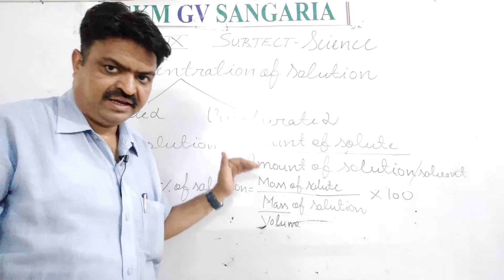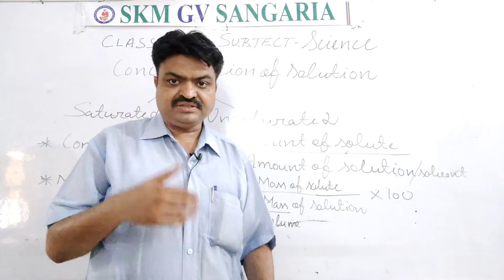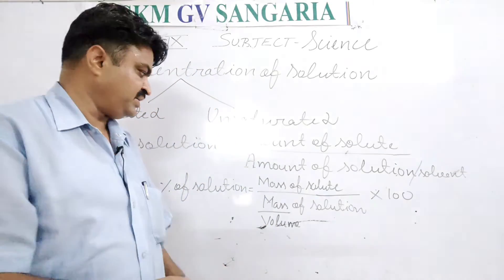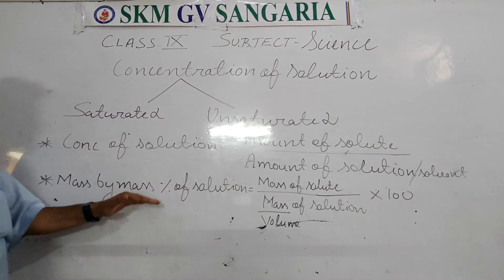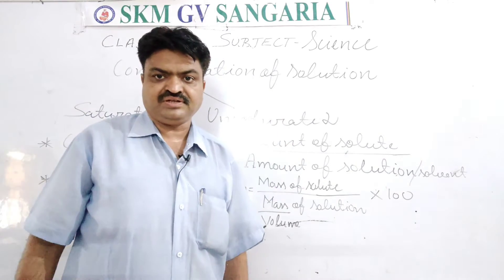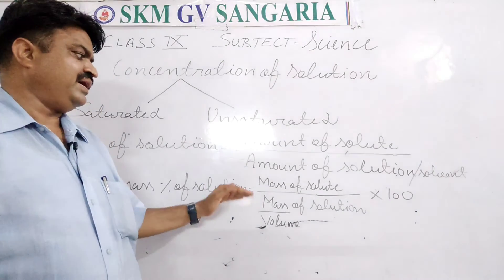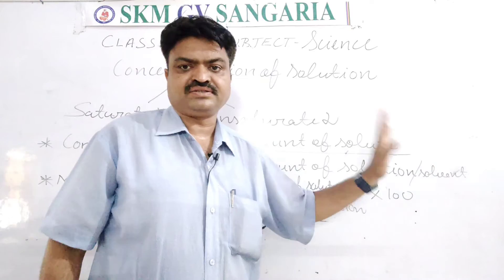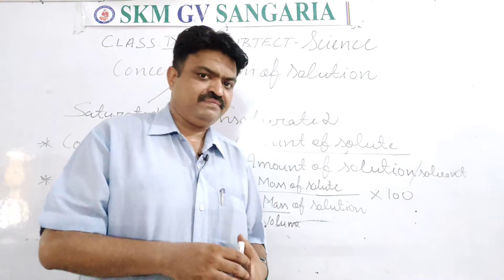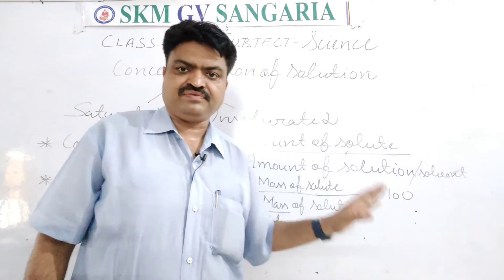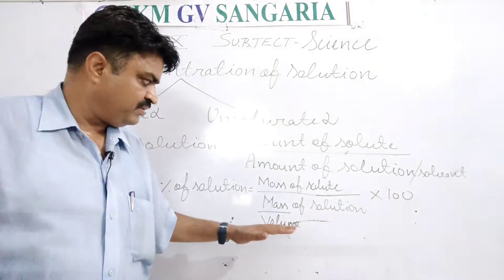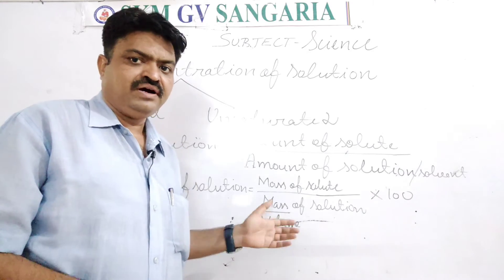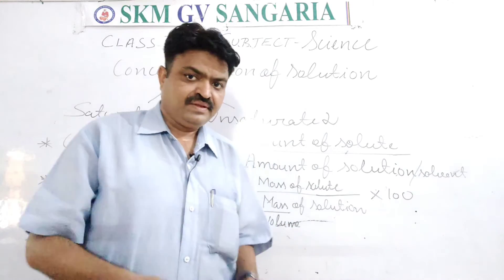So the two factors on which concentration of solution depends are: first, amount of solute; second, amount of solution or solvent. Now, the mass by mass percentage of solution is obtained using the formula: mass of solute divided by mass of solution (or volume of solution) multiplied by 100. You can take mass or volume of solution depending on what is given in the question.